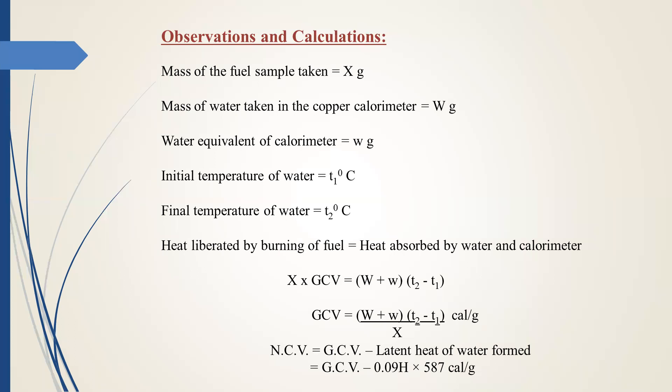We can calculate net calorific value equal to gross calorific value minus 0.09 times hydrogen percentage times 587 calories per gram.